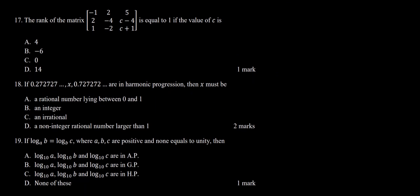Question 17 says: the rank of the matrix — here you can see we have a 3×3 matrix — is equal to 1, if the value of C is... In the third column, in the second row and third row, we have expressions C minus 4 and C plus 1. So we need to find the value of C such that the rank of the matrix equals 1.